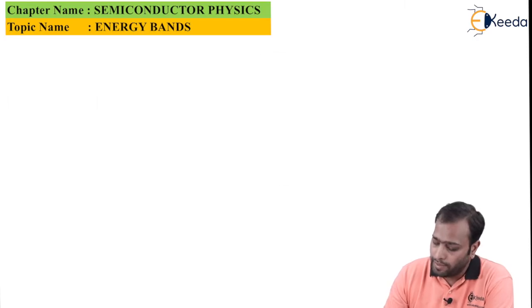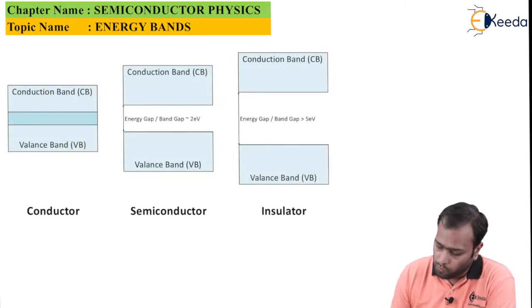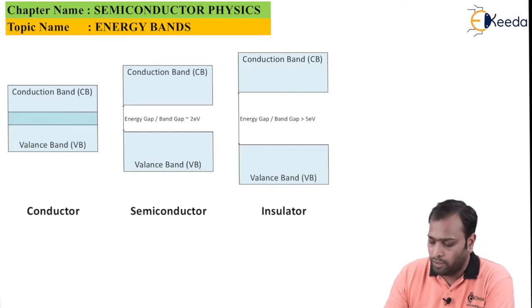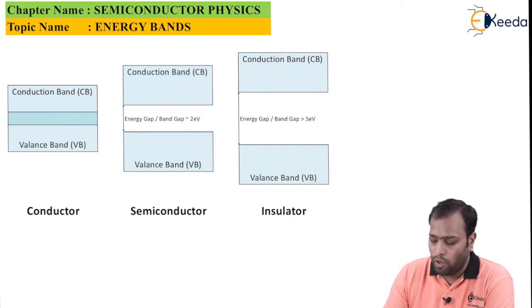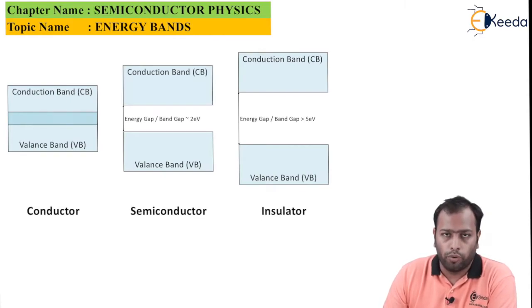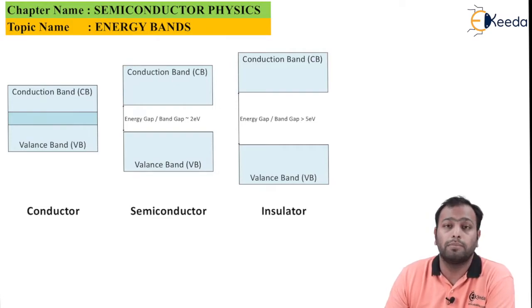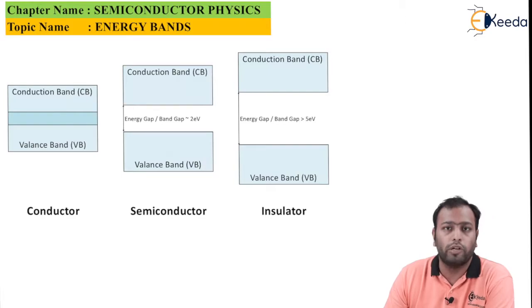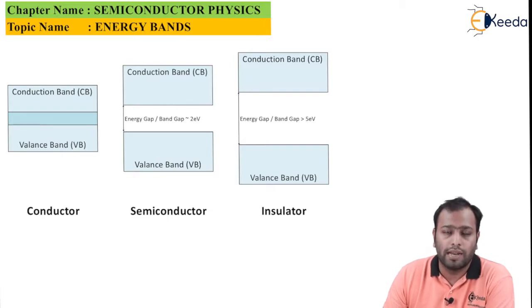As you can see in the slide, we have three different materials: conductor, semiconductor, and insulator. The common thing you can observe is that all of these have a conduction band and a valence band. An electron does not conduct electricity unless it leaves its valence shell, escapes the electron shell, and becomes a free electron.